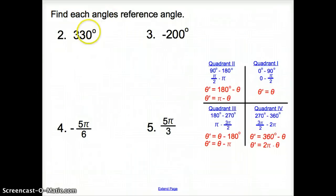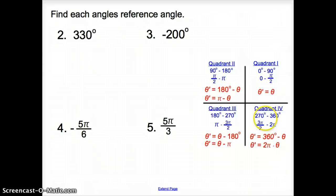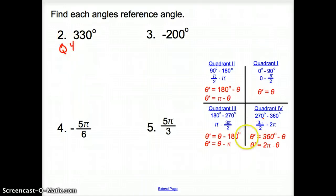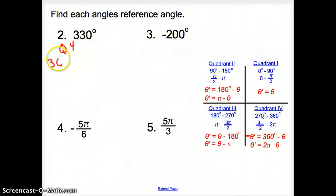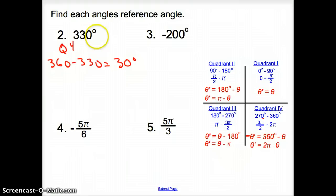In number 2, we are given 330°. First we find what quadrant it's in. 330° is between 270 and 360, so that is quadrant 4. In quadrant 4 with degrees, it's 360° minus 330°, which gives us 30°. So the reference angle for 330° is 30°.